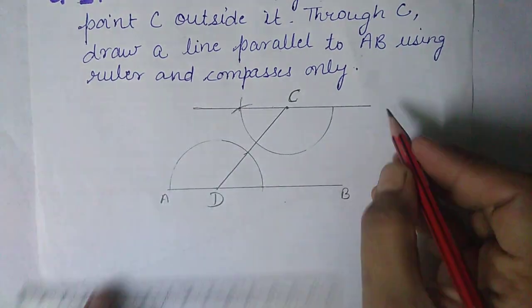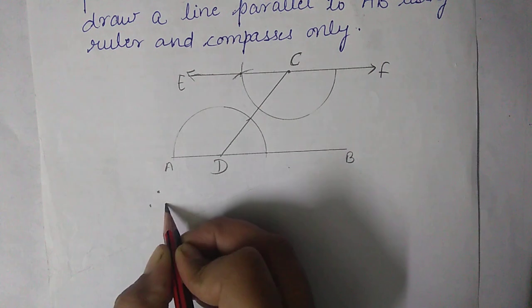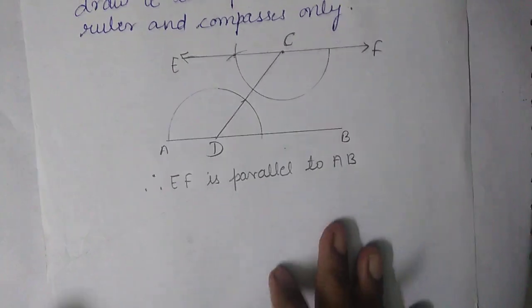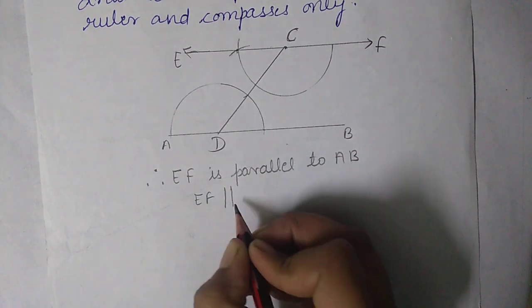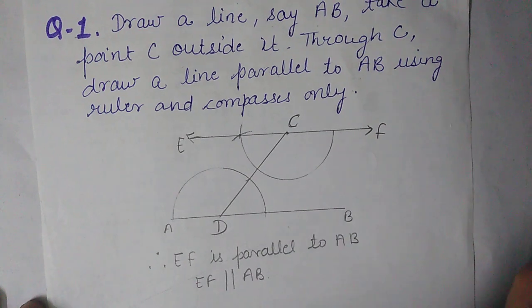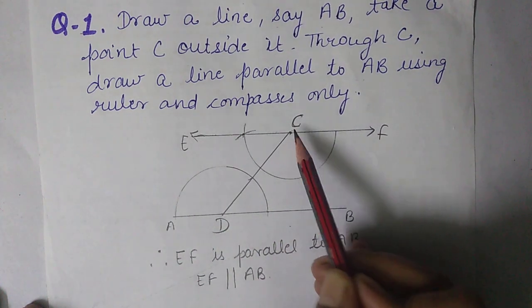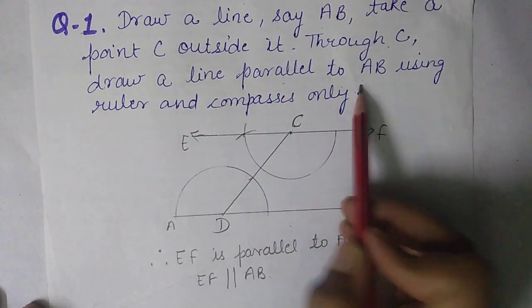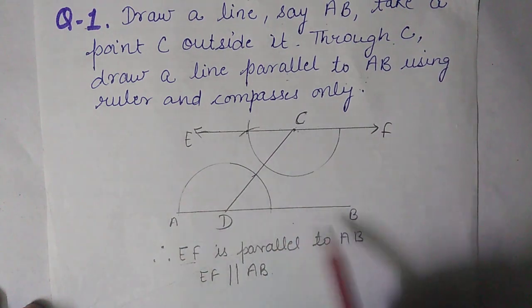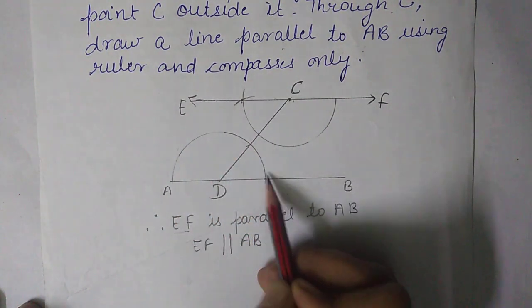I have drawn the line — let it be EF. So this is the required line. Therefore EF is parallel to AB. To recap: I drew line AB of any length, took point C outside it, joined C to point D on AB, drew a semicircle at D, then with the same radius drew a semicircle at C, measured the arc length, and with the same opening of the compass marked an arc on C's semicircle to get point E.